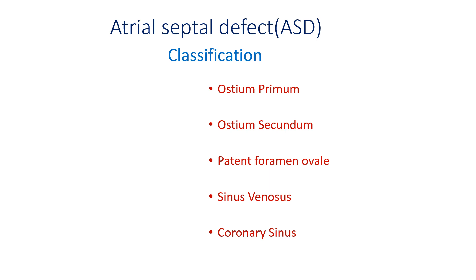Atrial septal defects can be classified into ostium primum type, ostium secundum, patent foramen ovale, sinus venosus, and coronary sinus type.